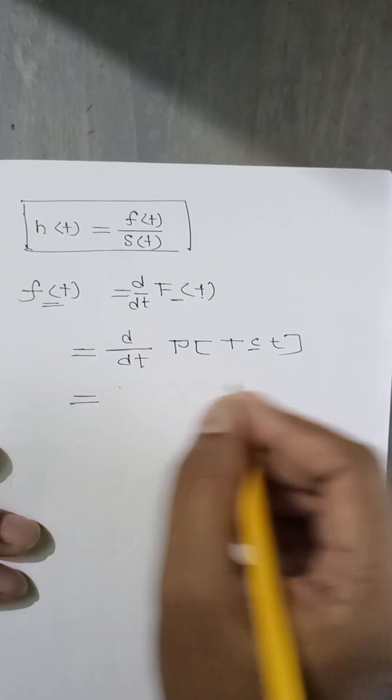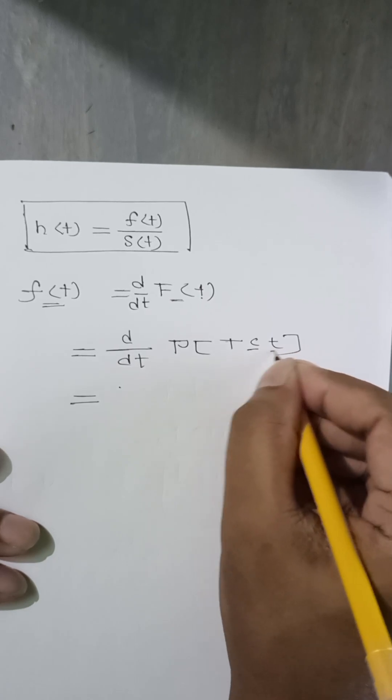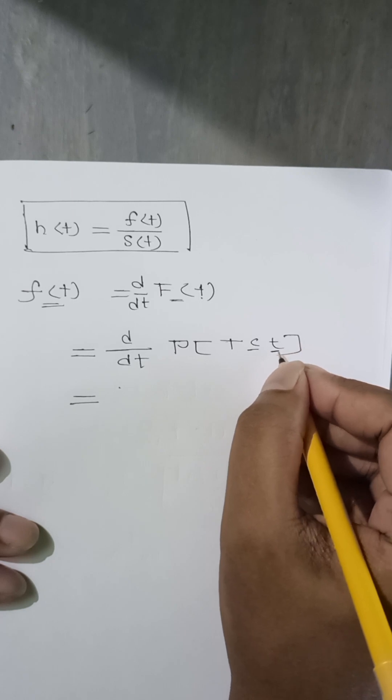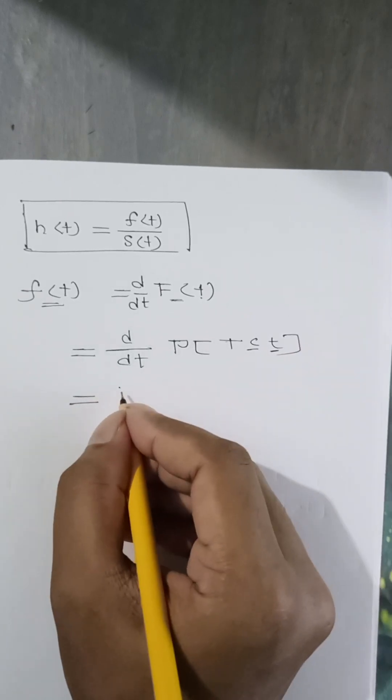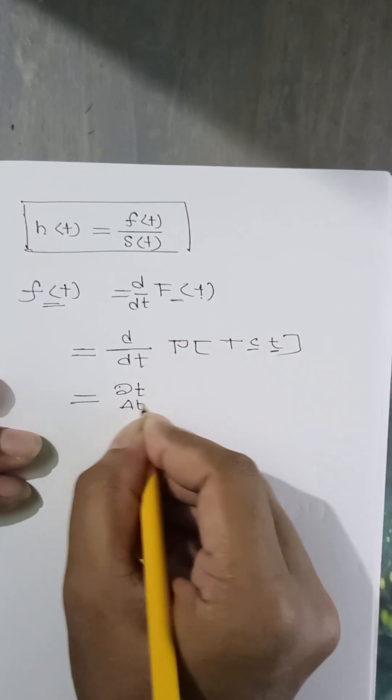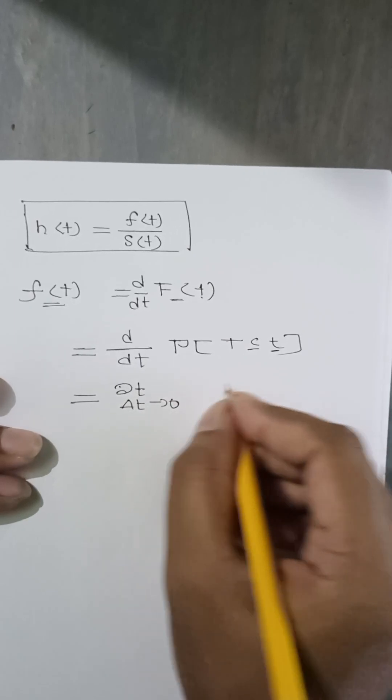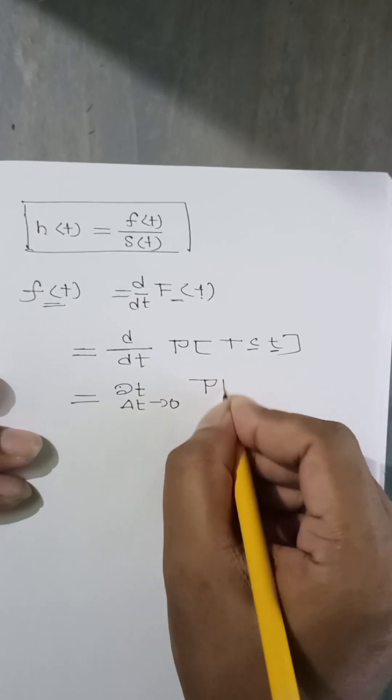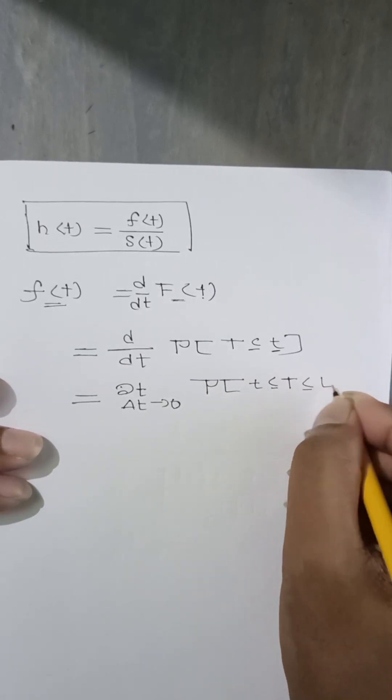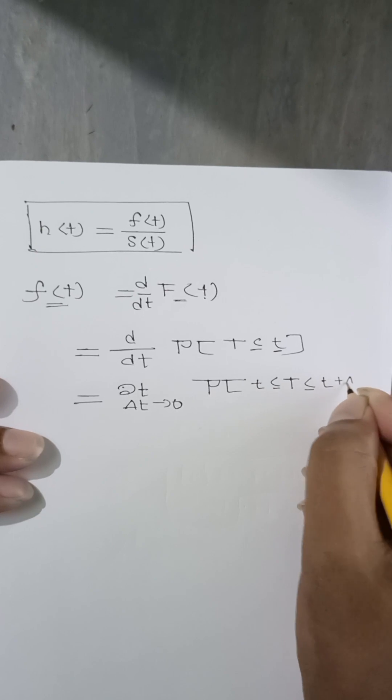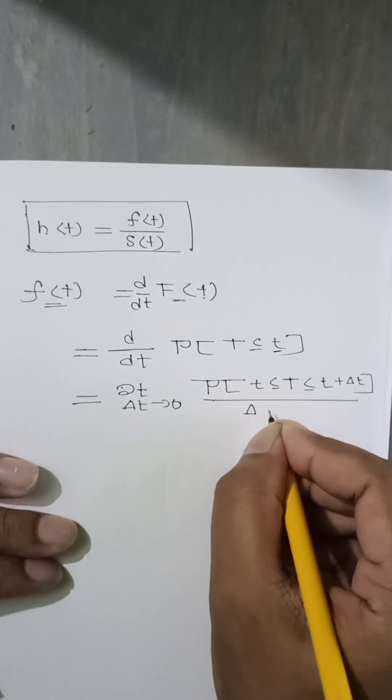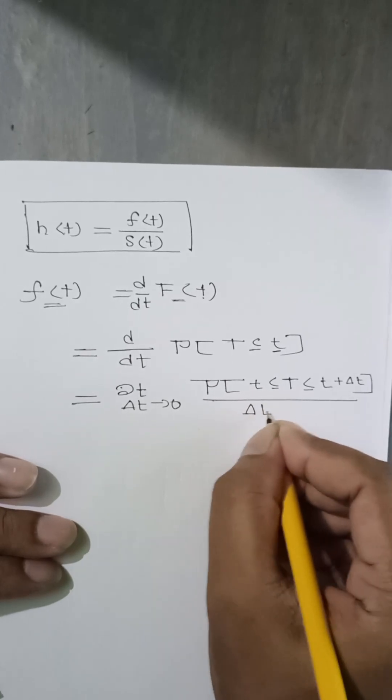You will know that if I change t with some very short value, it doesn't actually change here. So I can write d del t where del t tends to 0, and I can write probability of t less than T less than t plus del t. By the formula, at the denominator there is del t.